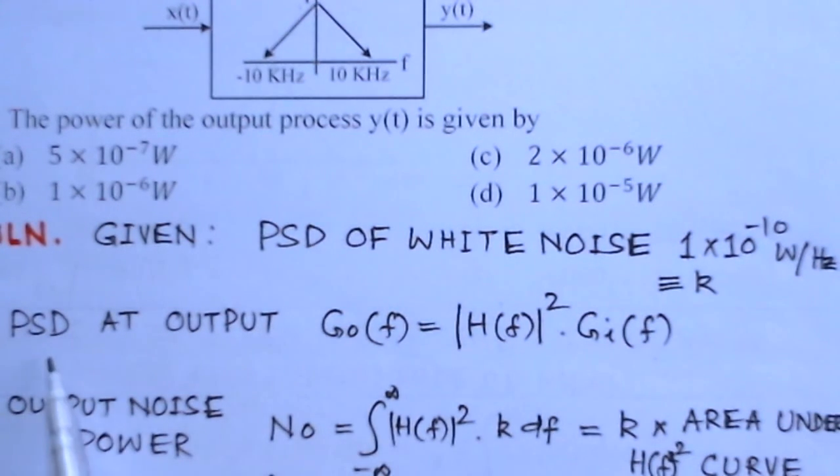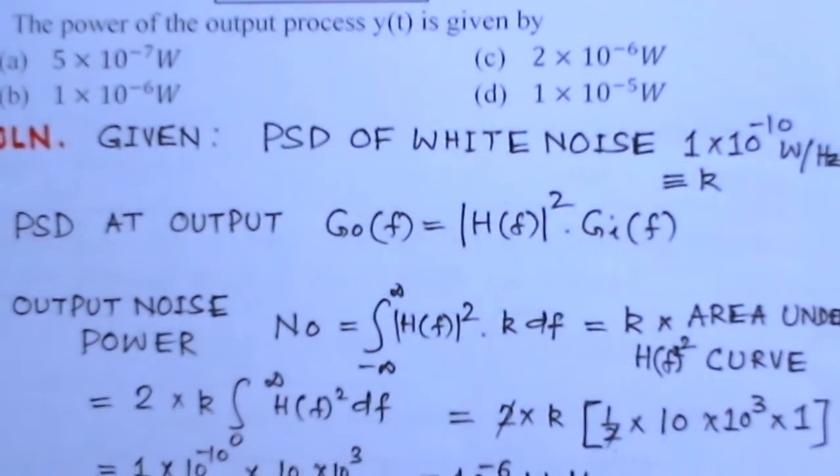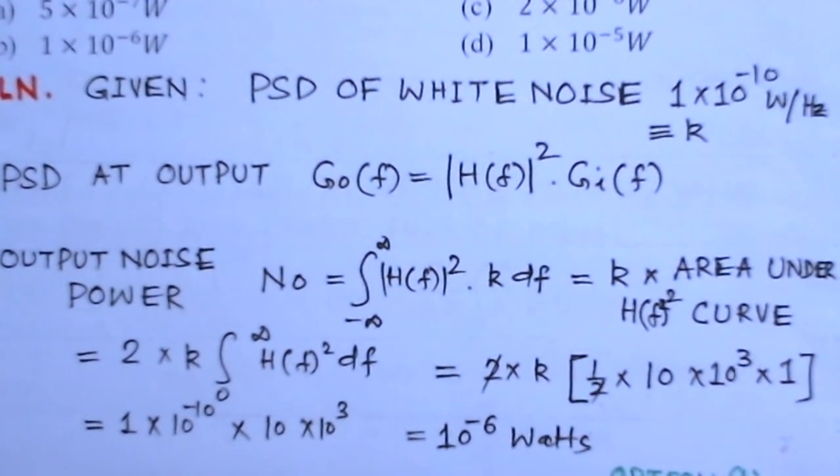This is the power spectral density at the output. If you have to find the power at the output, you should multiply it by the bandwidth. So output noise power can be evaluated as output noise power N_o.